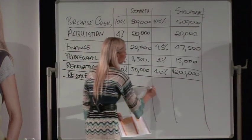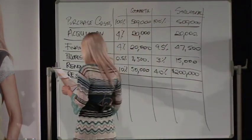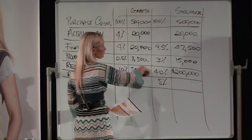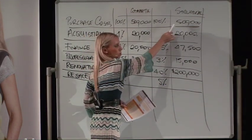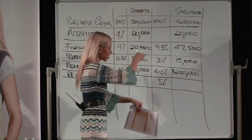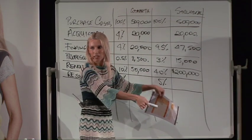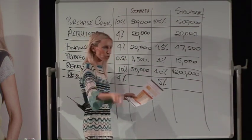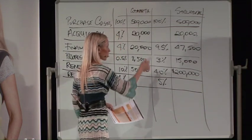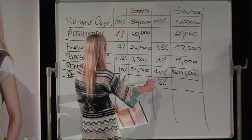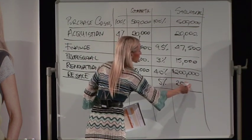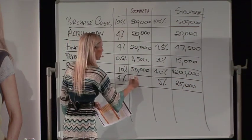Resale costs cover your agent's commission plus advertising and marketing fees — all factored into the equation. That's 4% for a cosmetic reno and 5% for a structural renovation. These figures are based on the purchase price but have fat built in so they effectively calculate off the resale value. So 5% of $500,000 is $25,000 for a structural reno, and 4% is $20,000 for cosmetic.